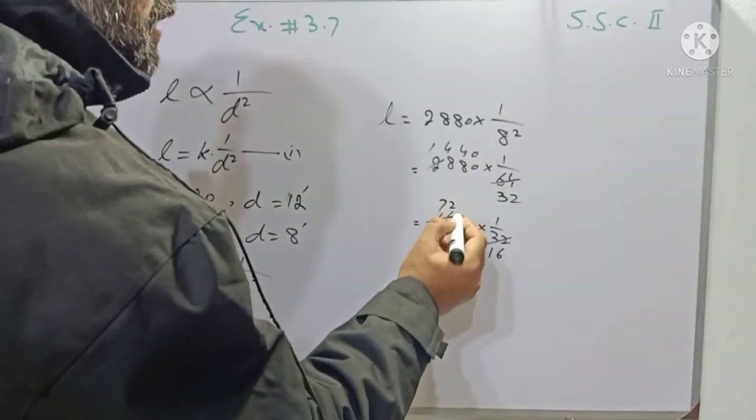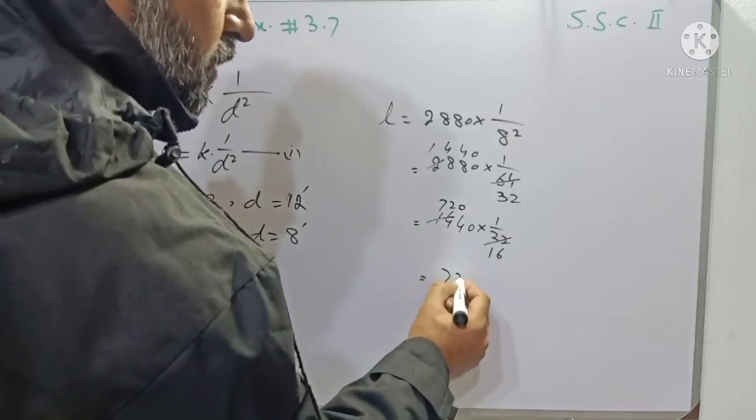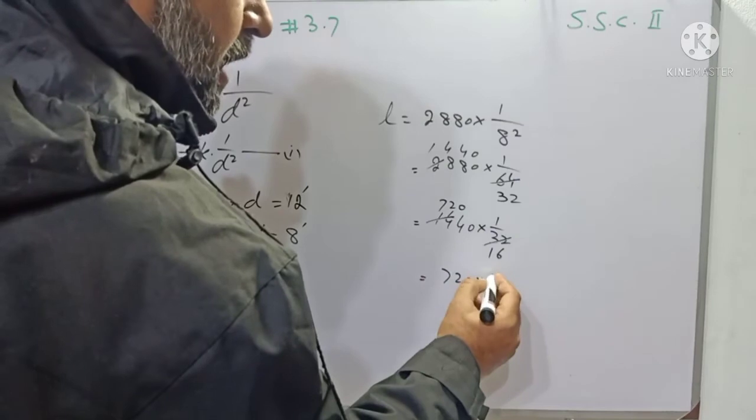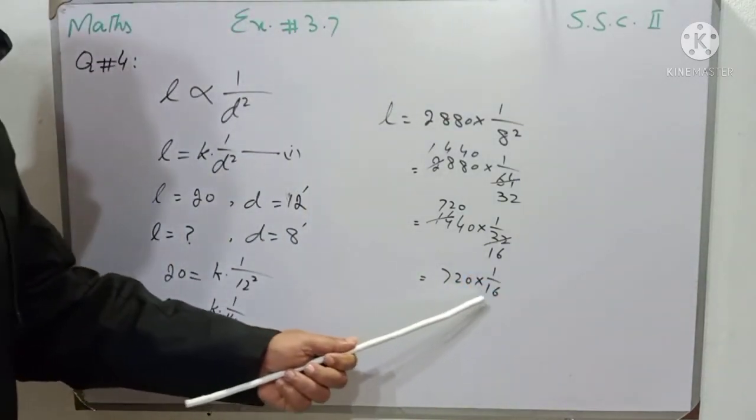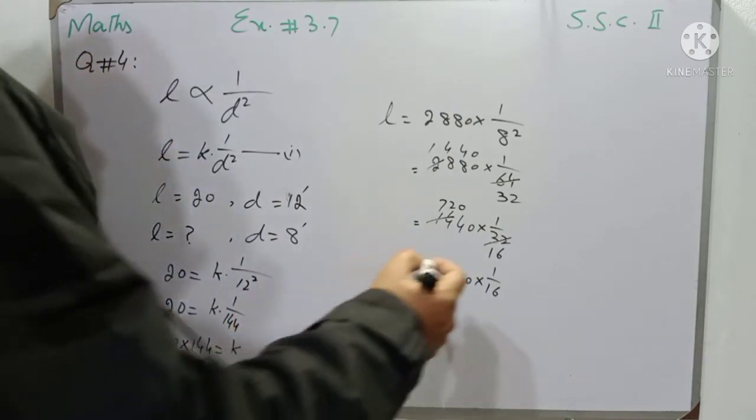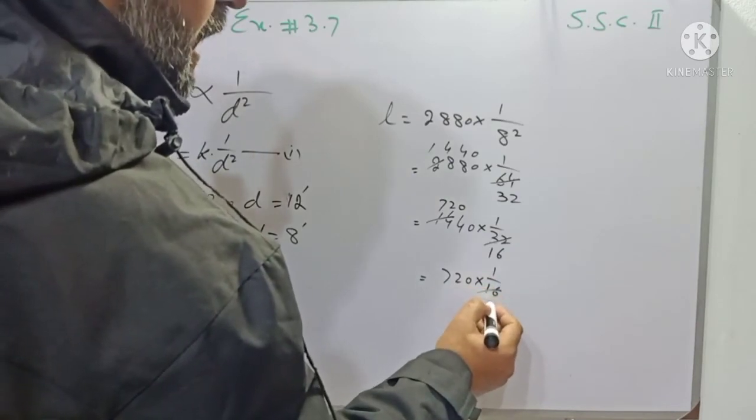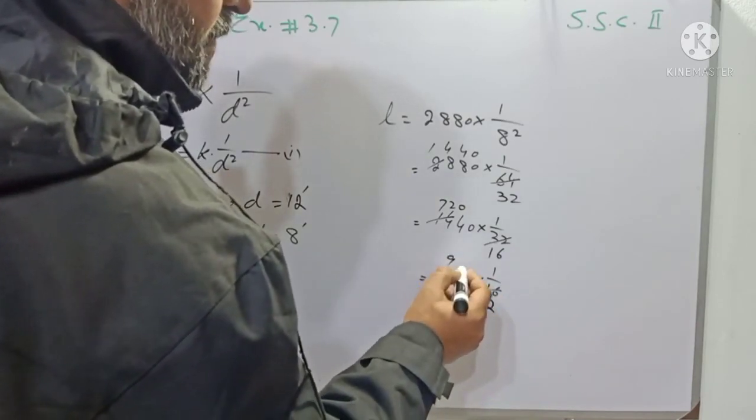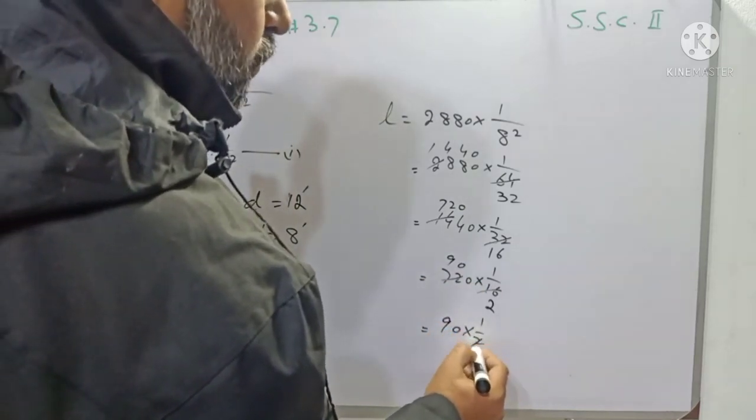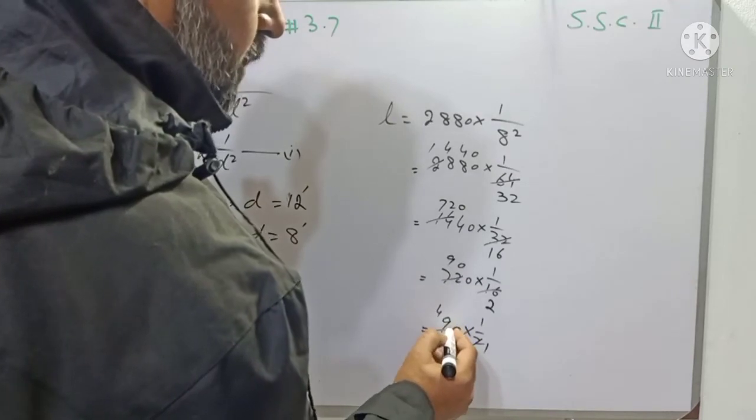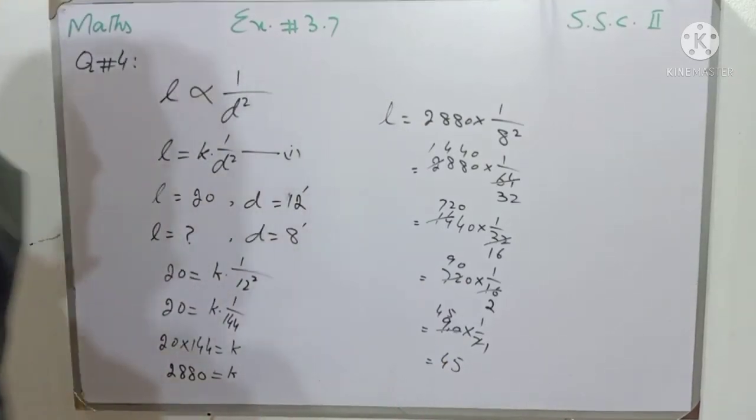720 multiply by 1 over 16. So now we have 720 divided by 16, which gives us 45 multiply by 1 over 1, equals 45 candle power.